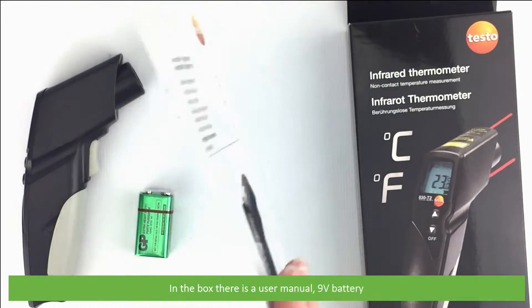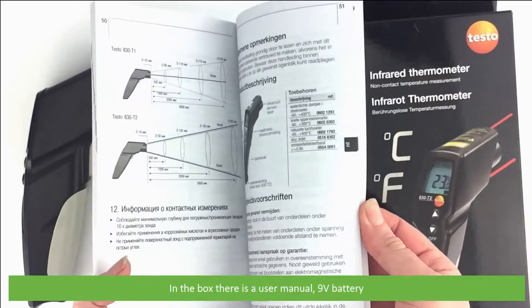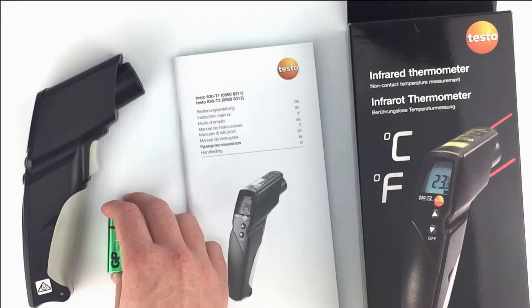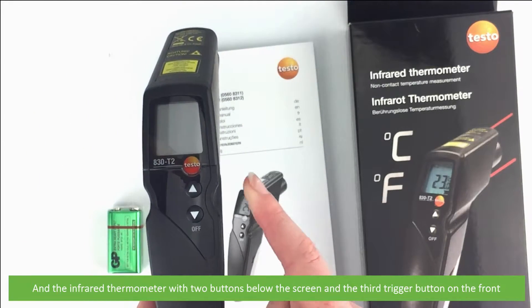In the box there's a user manual, a 9 volt battery and the infrared thermometer with two buttons below the screen and a third trigger button on the front.